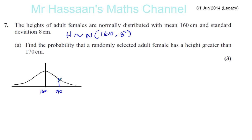So we want to find the probability that a randomly selected female has a height greater than 170. So we want to find basically the area here, but not in this graph. We want to have it when we have the mean is 0, and we want to work out what this is.